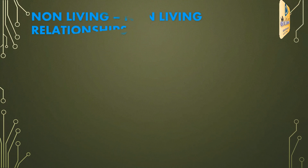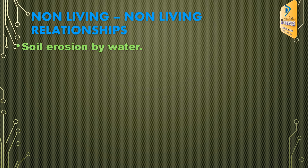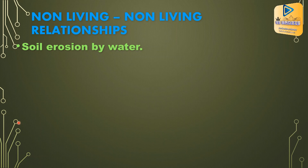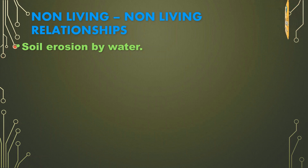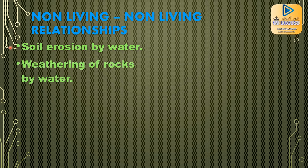Non-living-non-living relationships: the relation of a non-living thing to another non-living thing is called a non-living-non-living relationship. Examples are soil erosion by water, and weathering of rocks by water and air.